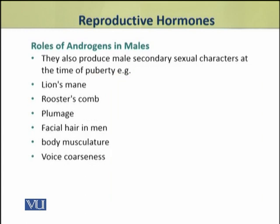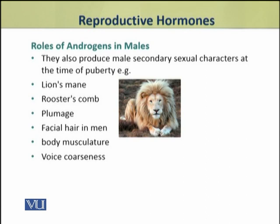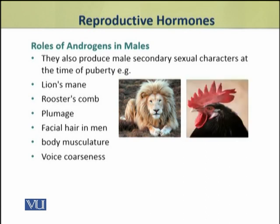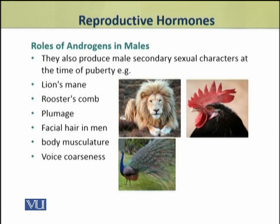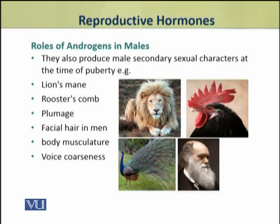Androgens also produce male secondary sexual characters. These characters develop after puberty. They include the lion's mane, rooster's comb, plumage in birds, facial hair in men, body musculature in males, and voice coarseness. All these are secondary sexual characters, and they develop after puberty.